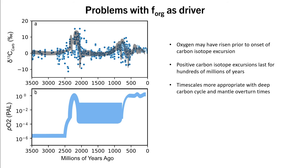Additionally, these positive carbon isotope excursions are extremely long-lived, lasting for hundreds of millions of years, and it has been difficult to provide any biological mechanisms to sustain increased F-ORG for such long periods of time. Timescales of hundreds of millions of years align better with processes occurring in the mantle's deep carbon cycle and are on the same magnitude of mantle overturn times.